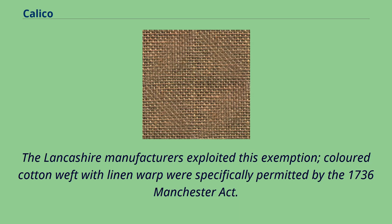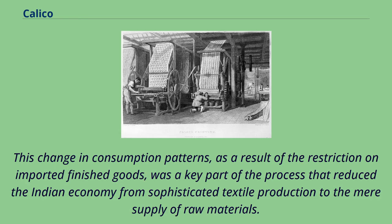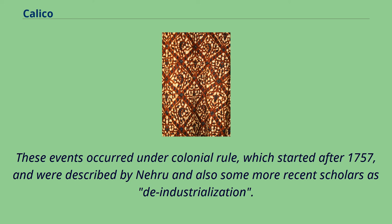The Lancashire manufacturers exploited this exemption — coloured cotton weft with linen warp were specifically permitted by the 1736 Manchester Act. In 1764, 1,755,580 kg of cotton wool was imported. This change in consumption patterns, as a result of the restriction on imported finished goods, was a key part of the process that reduced the Indian economy from sophisticated textile production to the mere supply of raw materials. These events, described by Nehru and more recent scholars as deindustrialization, occurred under colonial rule which started after 1757.